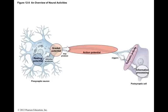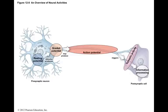The postsynaptic cell will respond, but the response will depend on other factors, such as what other stimuli are influencing the cell at the same time. The integration of all these different stimuli is called information processing in the nervous system.